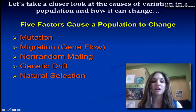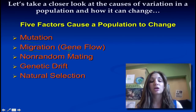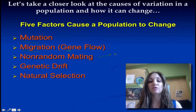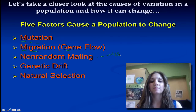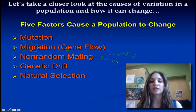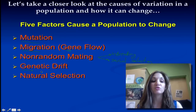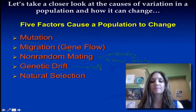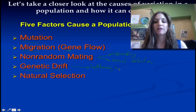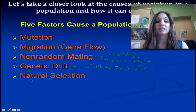Our five factors are mutation, migration meaning gene flow — and remember that there are two parts to migration — non-random mating which comes in two varieties: inbreeding and sexual selection. Beyond that, we'll also talk about genetic drift, which is mostly due to chance and deals with factors such as the bottleneck effect as well as the founder effect.